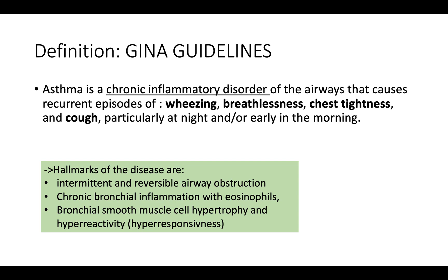According to GINA guidelines, asthma is a chronic inflammatory disorder of the airways that causes recurrent episodes of wheezing, breathlessness, chest tightness and cough, particularly during the night and early in the morning. Hallmarks of the disease include intermittent and reversible airway obstruction — hence why we can treat it with medication — and chronic bronchial inflammation with eosinophils.